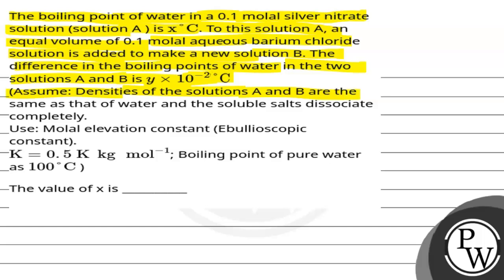Assume densities of solutions A and B are the same as that of water and the soluble salts dissociate completely. Use molal elevation constant, ebullioscopic constant k is equal to 0.5 k kg mol inverse, boiling point of pure water as 100 degrees Celsius.